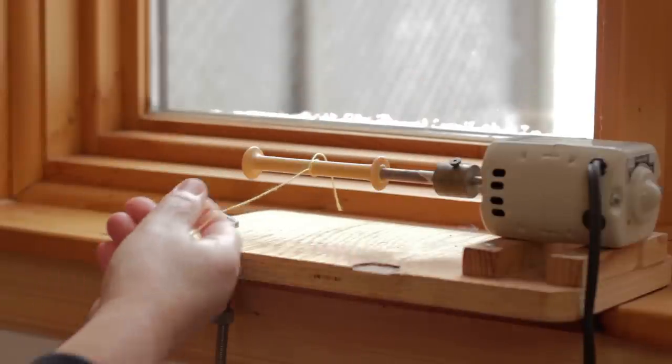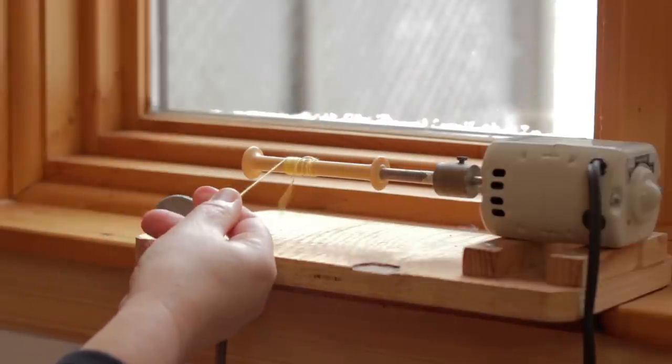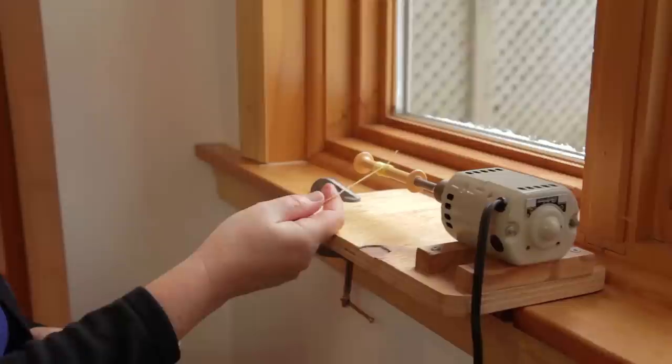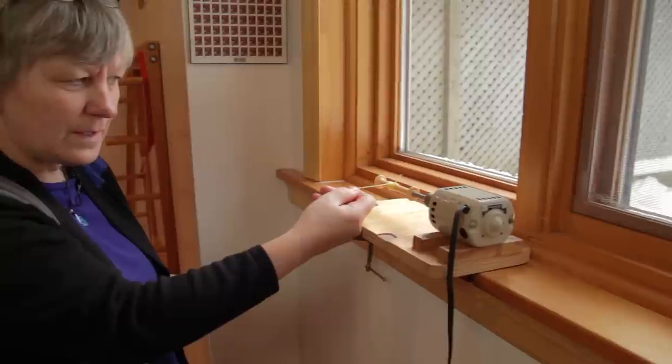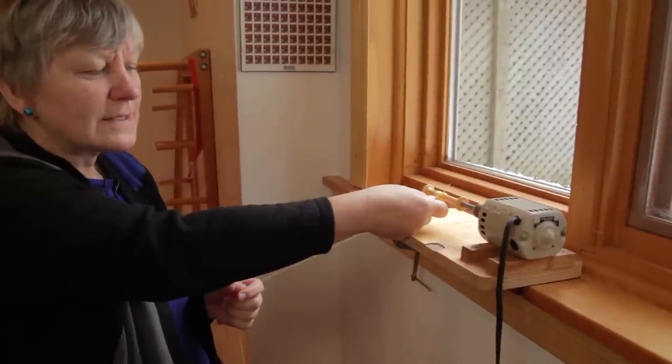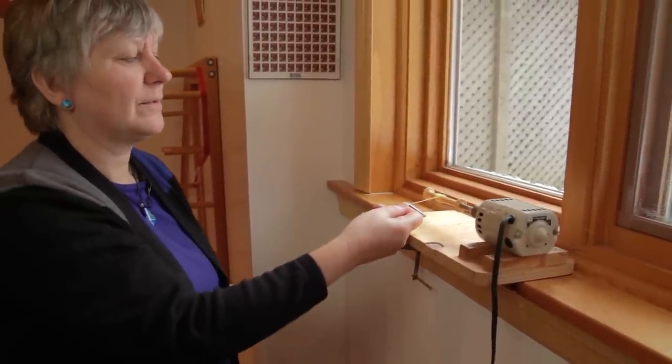I am going to step on my pedal. This is a variable speed bobbin winder. So you can see it goes fast or slow. You do not want to go too fast on the electric bobbin winder. And again you want to have your finger fairly close to the bobbin. But not as close as we had on the hand bobbin winder.